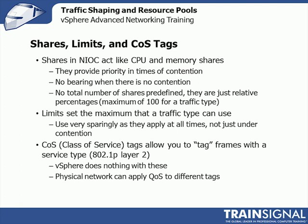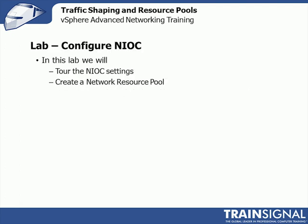If you want to use 802.1p but don't really care about network I.O. control, you may just want to enable it, set all the shares to be equal, and just go about your business — but go ahead and configure it to tag those frames. So now let's jump over to the lab. We're going to tour network I.O. control, create a network resource pool, show you how to set shares, set limits, create resource pools, put port groups in them — all so you'll know how to use network I.O. control.